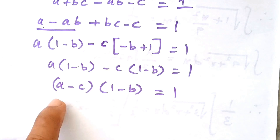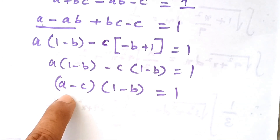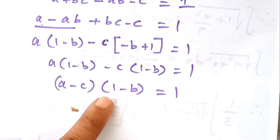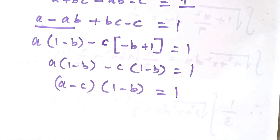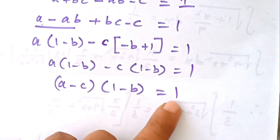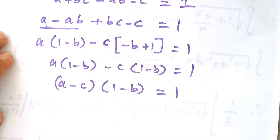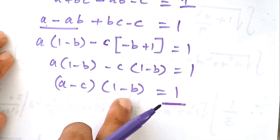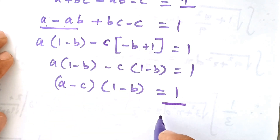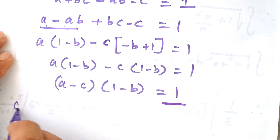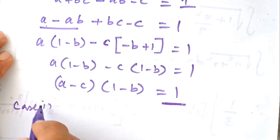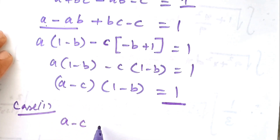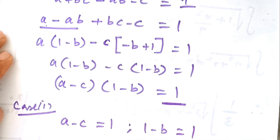So therefore we can write this as (A minus C)·(1 minus B) is equal to 1. Here, (A minus C) is one factor and (1 minus B) is another factor, and when multiplying these two factors the result is 1. To get a product of 1, there are two possibilities. Case 1: A minus C equals 1 and 1 minus B equals 1.